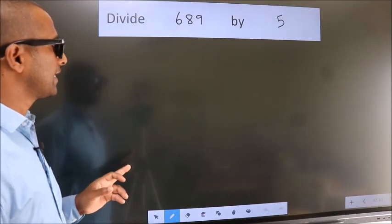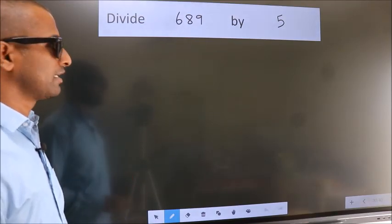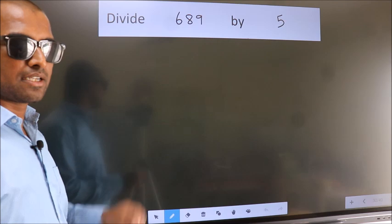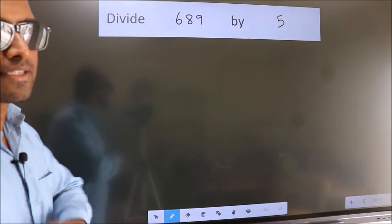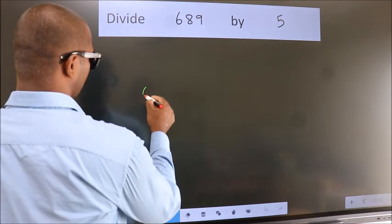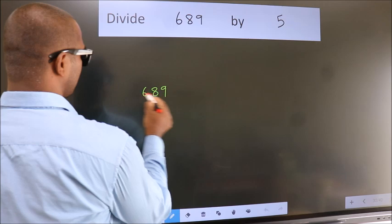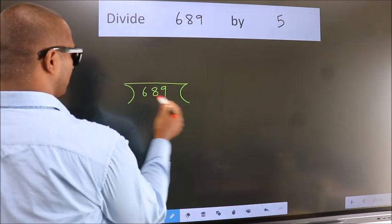Divide 689 by 5. To do this division, we should frame it in this way. 689 here, 5 here.